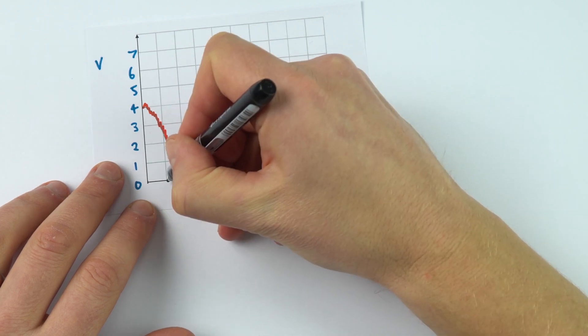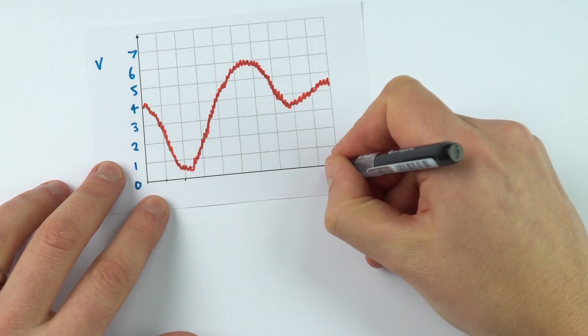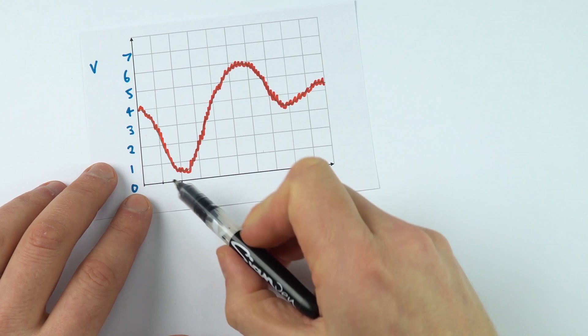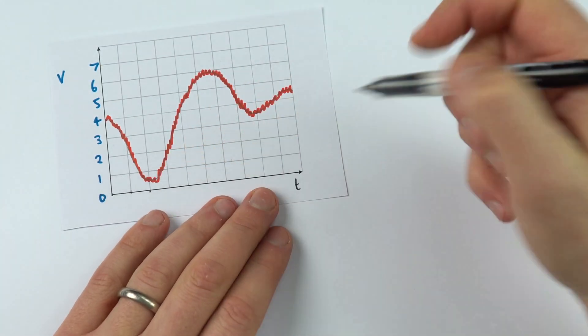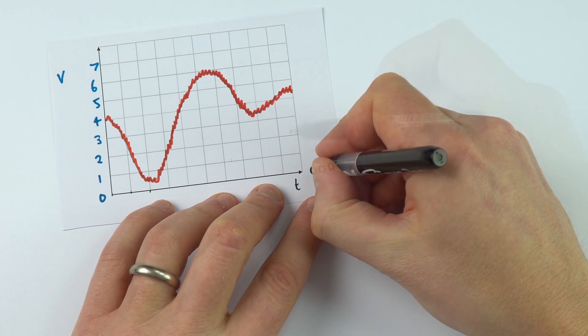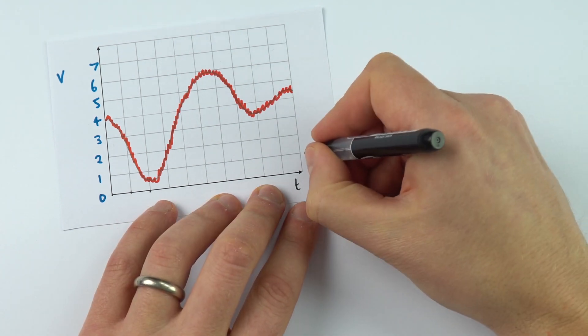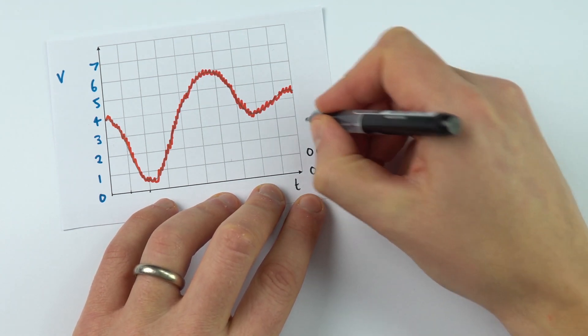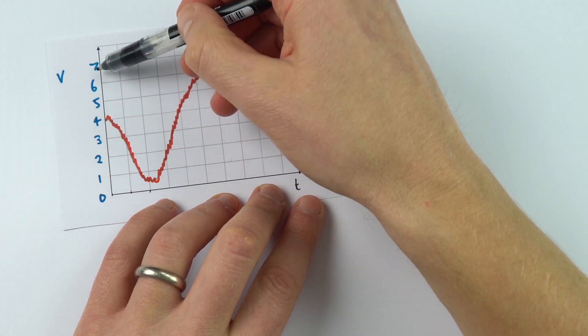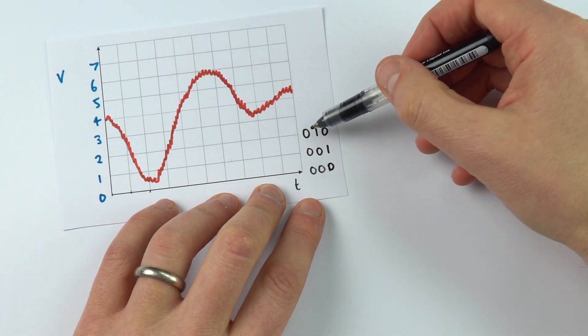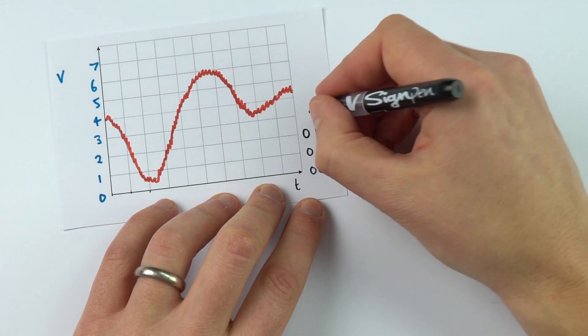We're going to sample at regular time intervals so we've got time along the bottom here and I'm just going to put these decimal numbers down in binary format. So the number zero is 000, we've then got 001, 010 and all I'm doing is converting these different values for a voltage into a three-bit binary number.